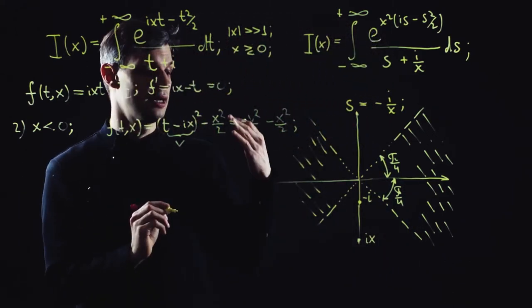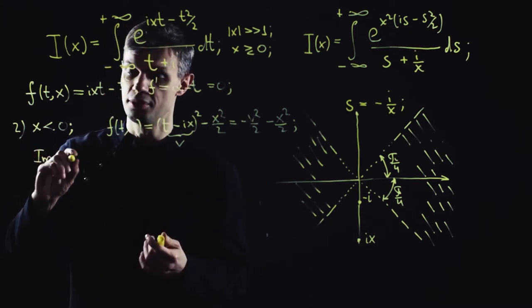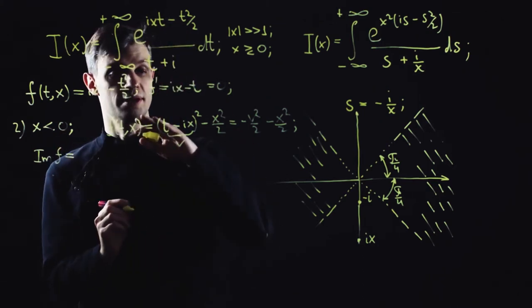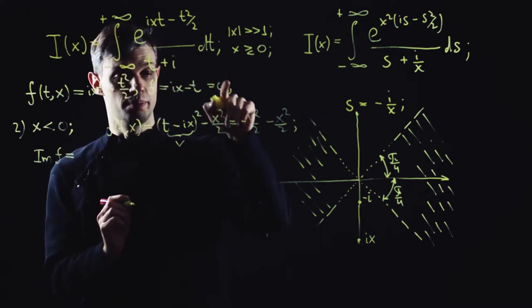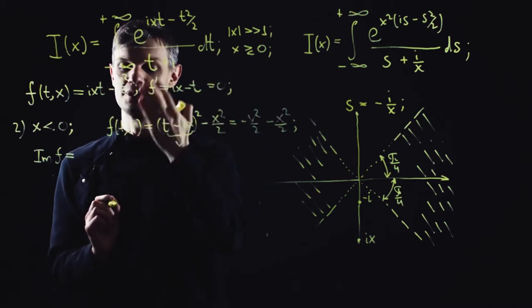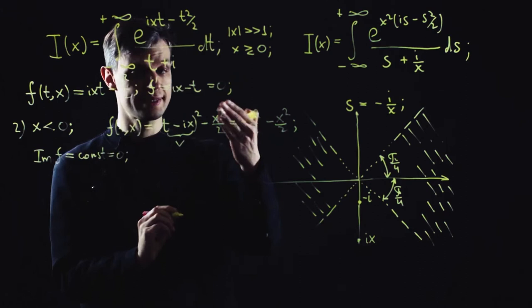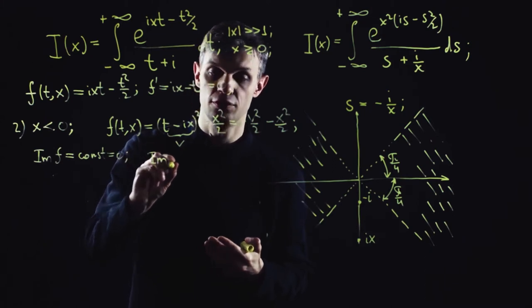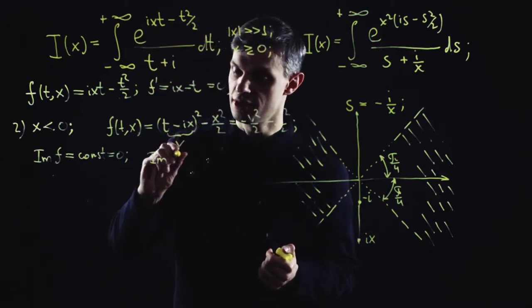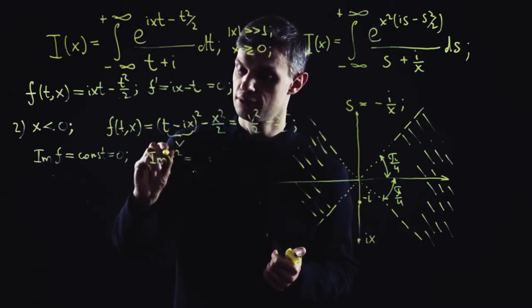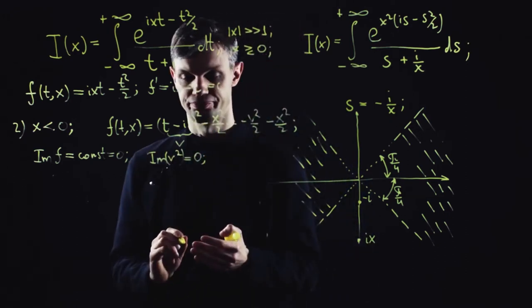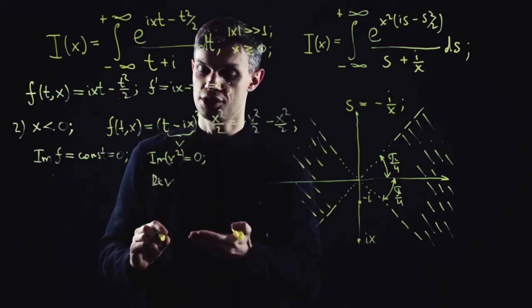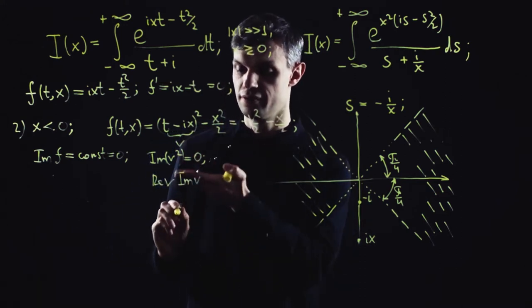The stationary phase lines are defined by the condition: the imaginary part of the exponent function should be constant. The imaginary part of the exponent function at the saddle, meaning when v equals 0, is equal to 0. Hence, the equation for the stationary phase lines are now transformed into the condition: the imaginary part of v squared should be equal to 0.